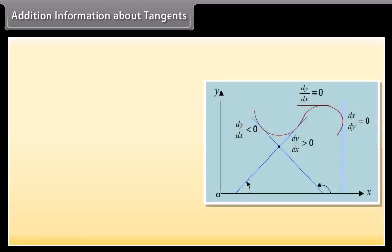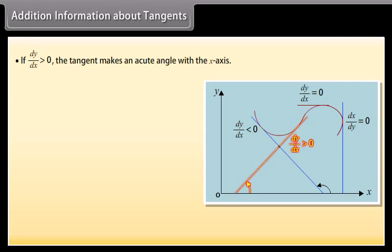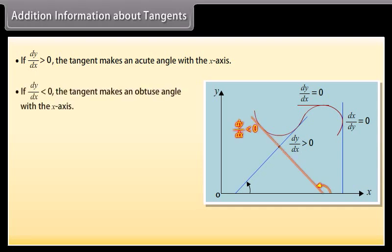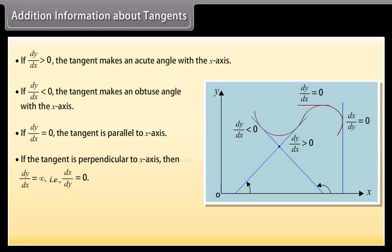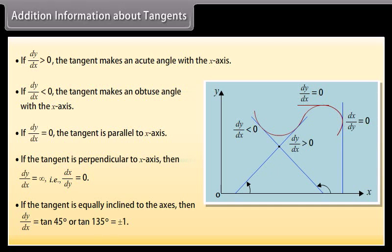Additional information about tangents: If dy/dx > 0, the tangent makes an acute angle with the x-axis. If dy/dx < 0, the tangent makes an obtuse angle with the x-axis. If dy/dx = 0, the tangent is parallel to the x-axis. If the tangent is perpendicular to the x-axis, then dy/dx is infinite, i.e., dx/dy = 0. If the tangent is equally inclined to the axes, then dy/dx = tan 45° or tan 135° = ±1.